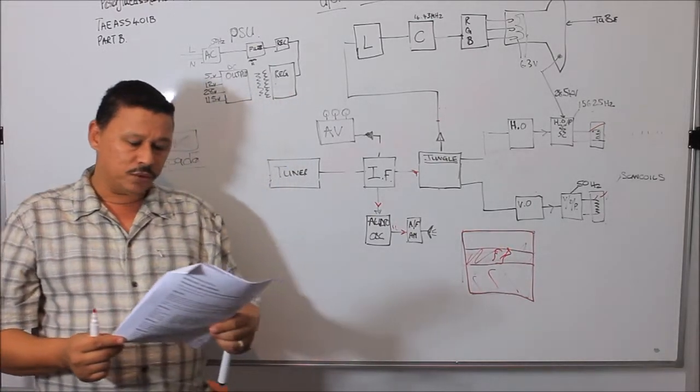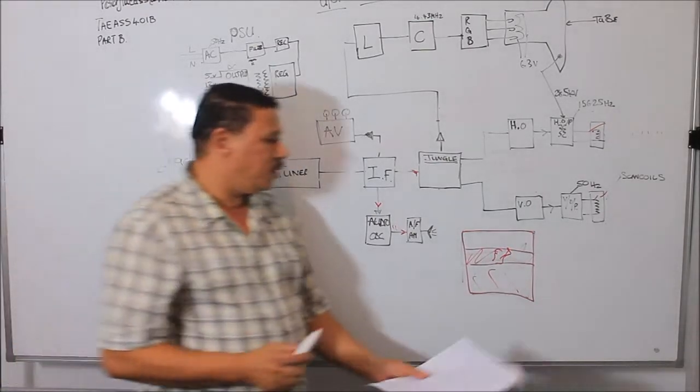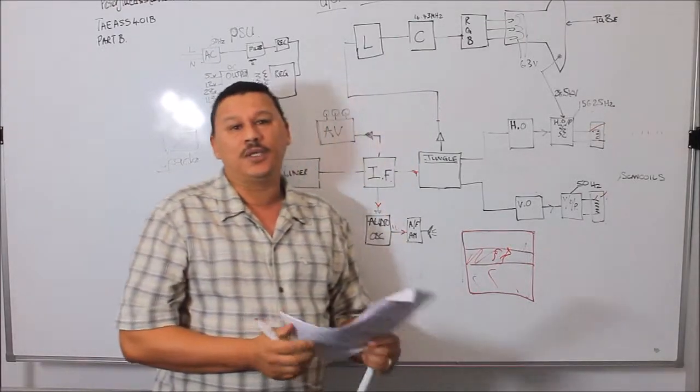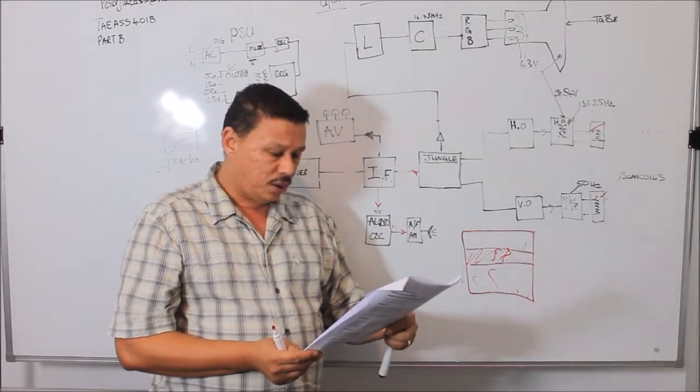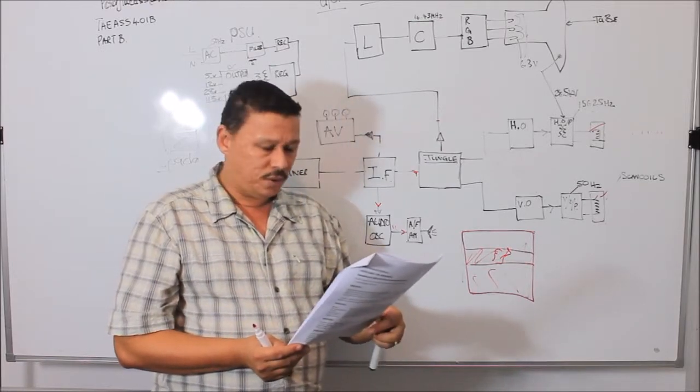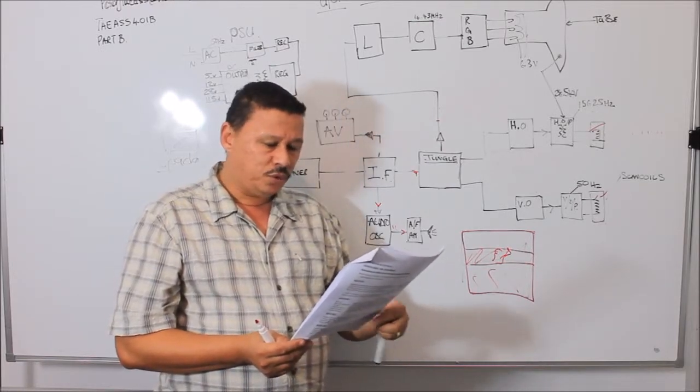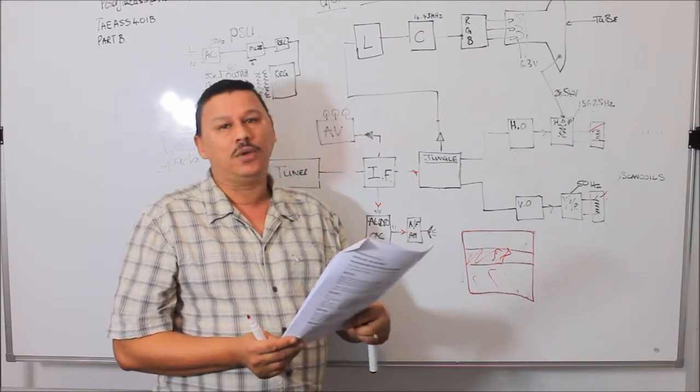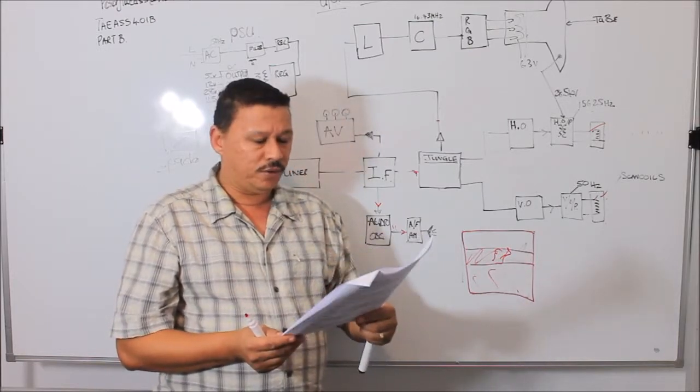The next fault. If there's a fault in the line stage, now the line stage is also known as the horizontal stage. How would you go about looking for a fault in this stage? And what type of tools would you use to actually look to find the fault?